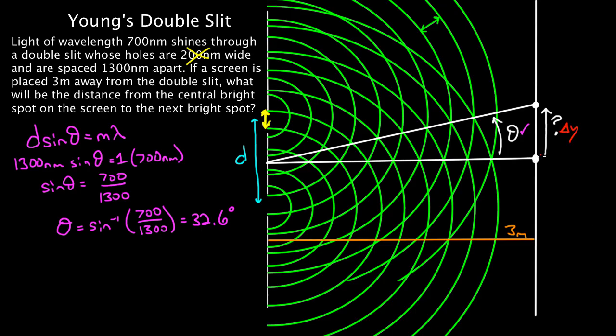This is the opposite side to that angle. That's the opposite side. We know the adjacent side. This adjacent side, we were told, was three meters away from the screen. The screen was three meters away from the double slit. And how do we relate the opposite side to the adjacent side?